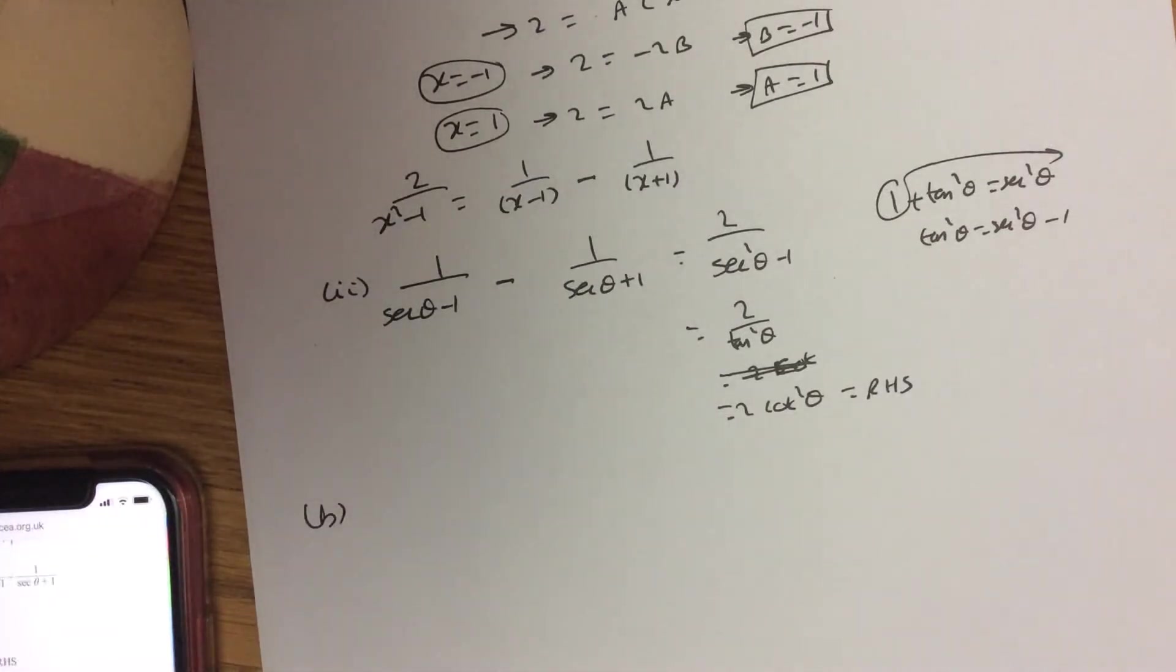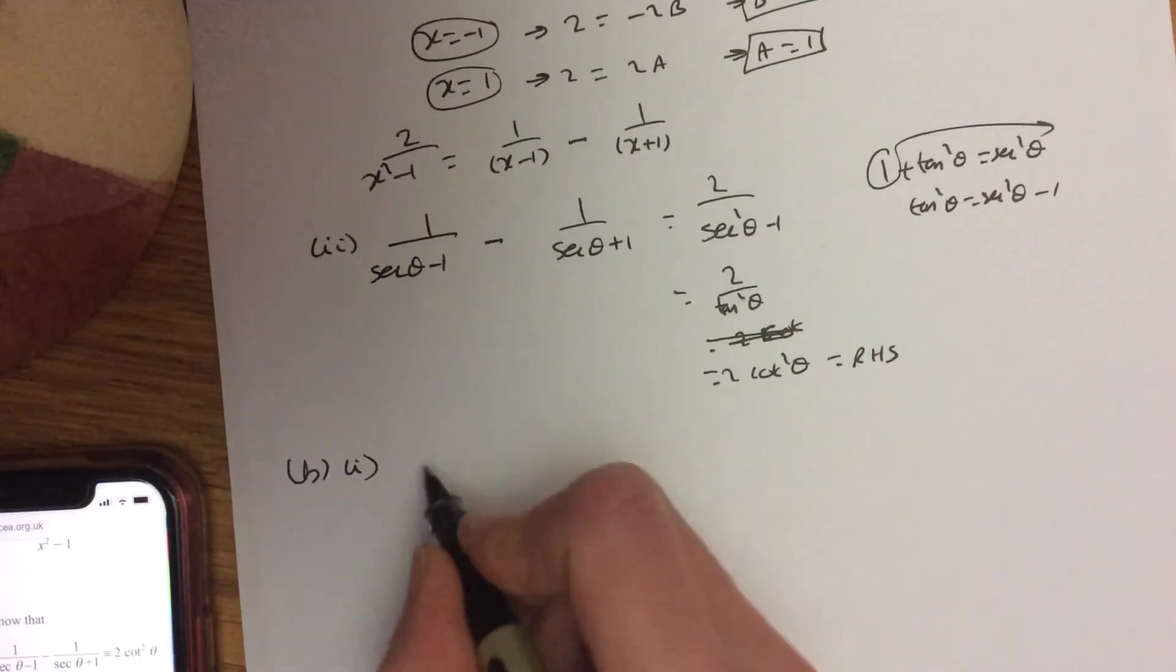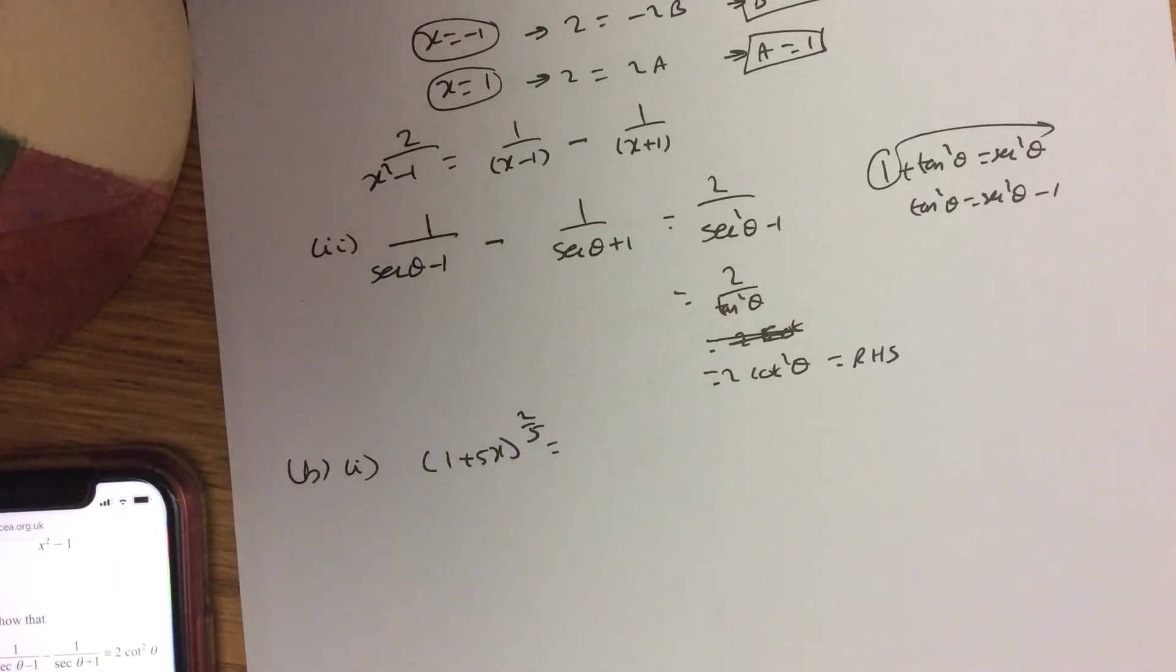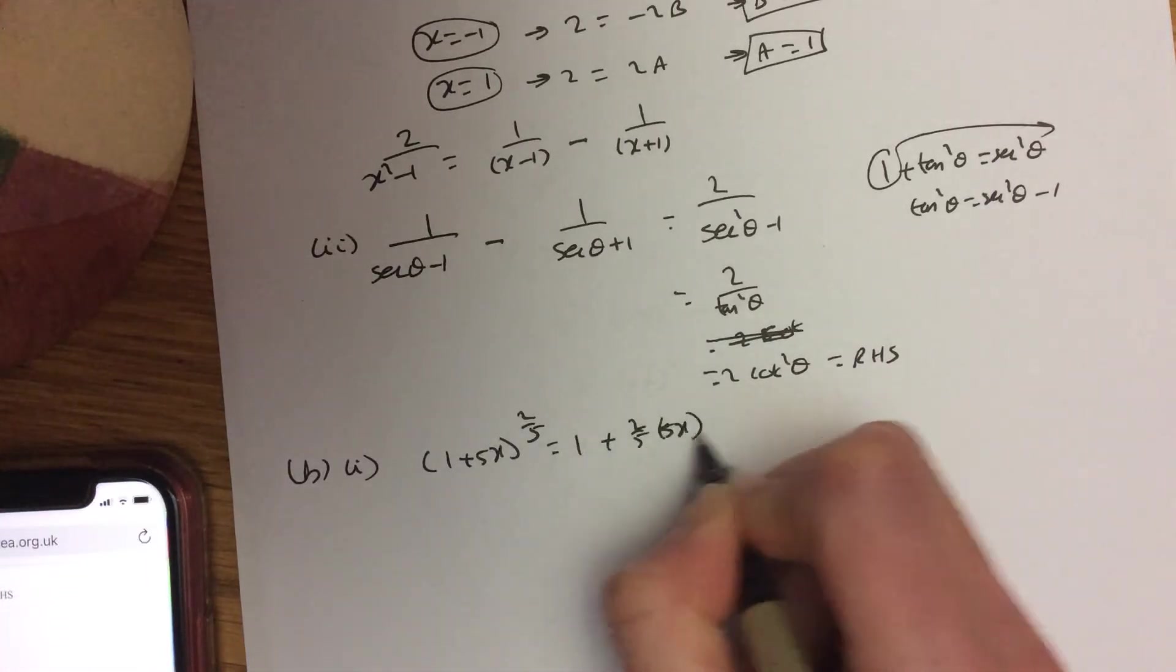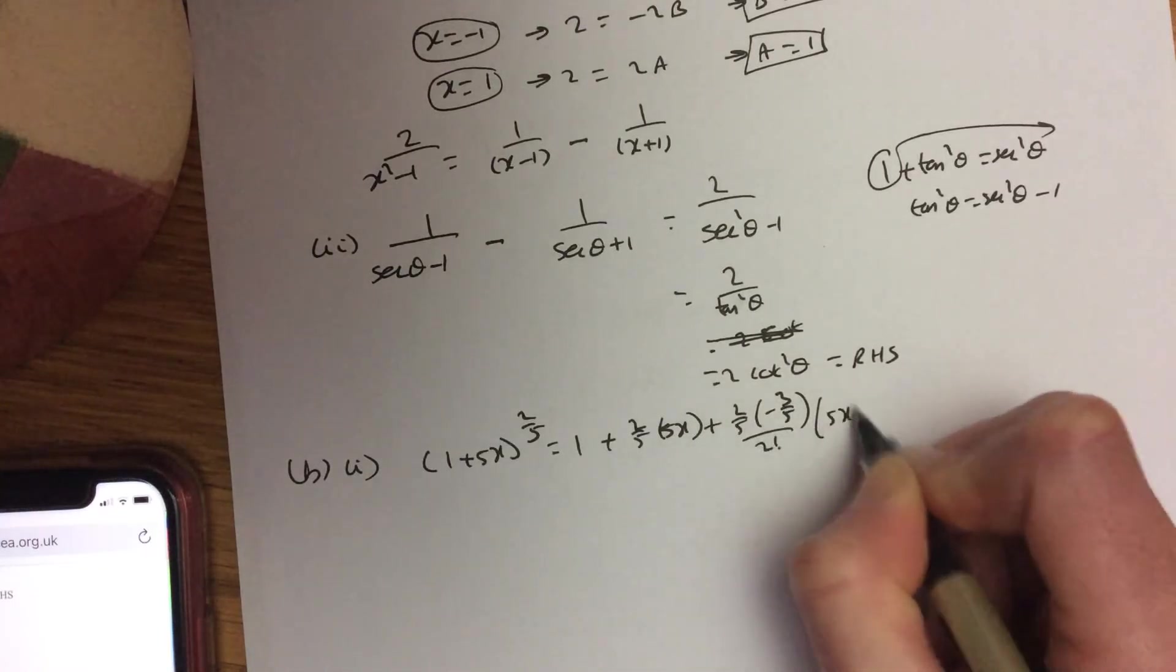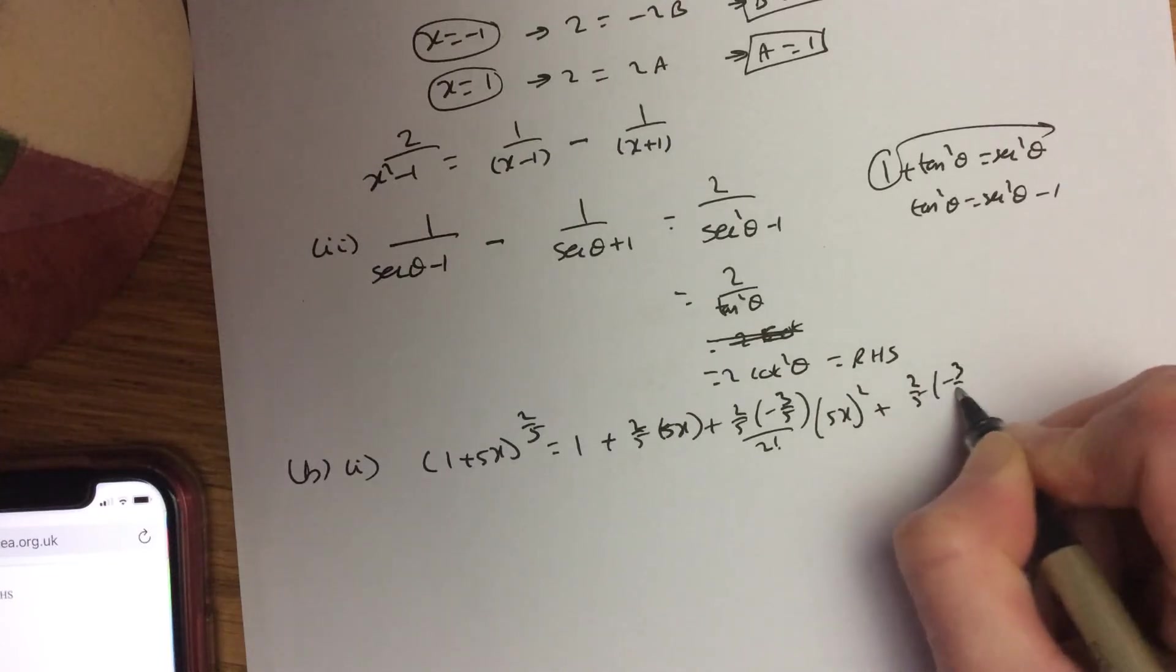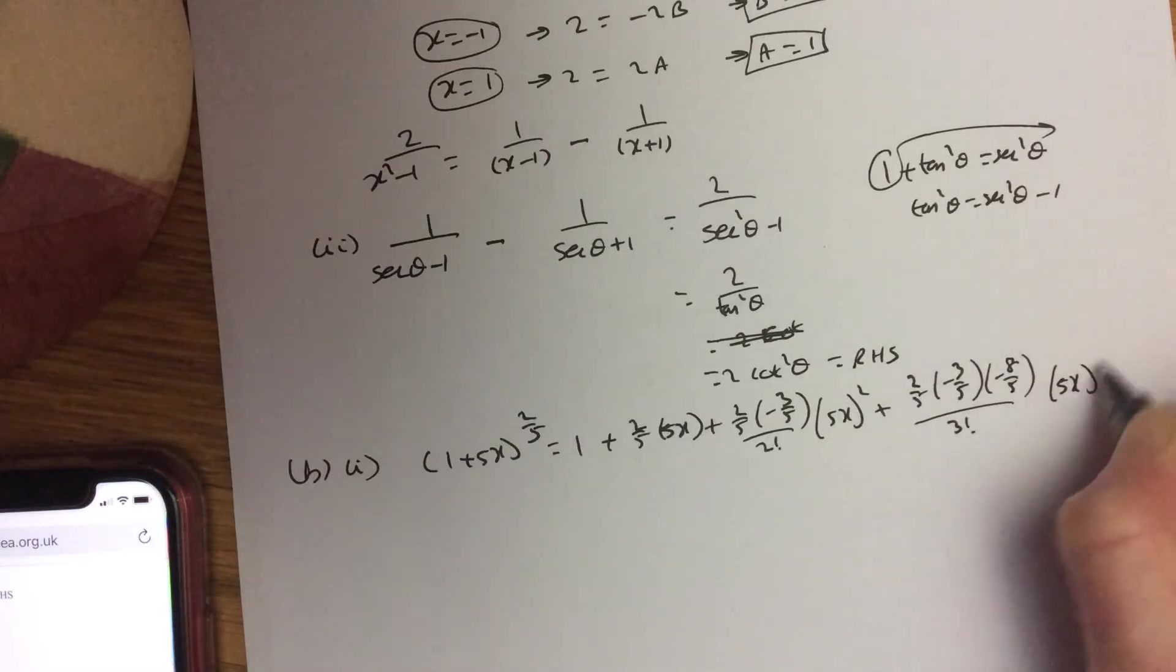Now, part b(i), I'm going to do a bit of work in this question. Expand 1 plus 5x to the power 2 over 5 up to x cubed. So just working that out: 1 plus nx plus n(n minus 1) over 2 factorial x squared. And I had one more: n(n minus 1)(n minus 2) over 3 factorial x cubed.